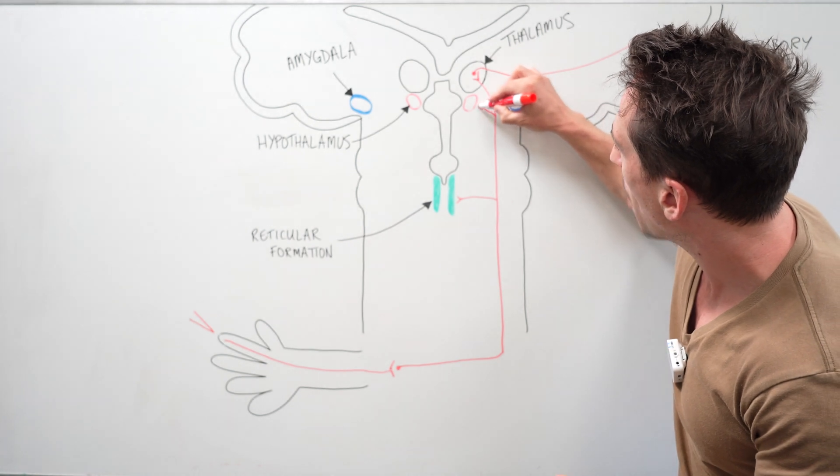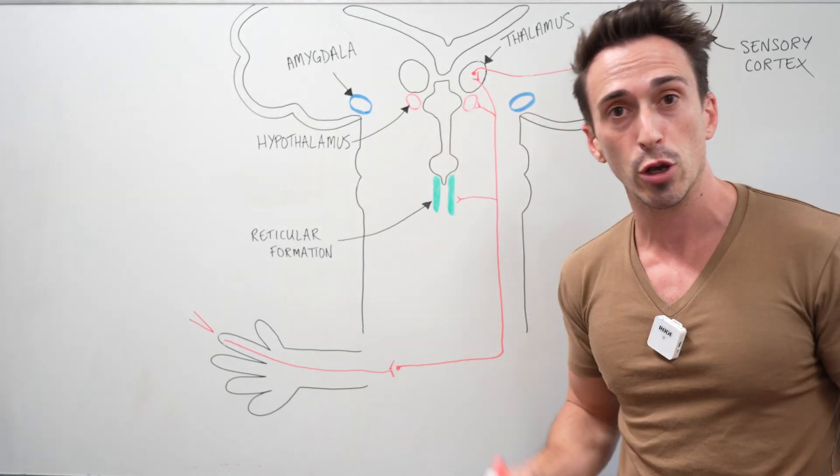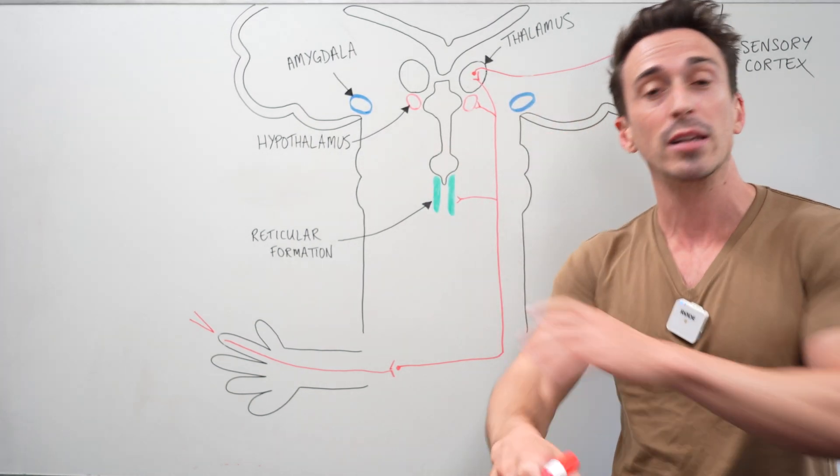It talks to the hypothalamus, which triggers the sympathetic nervous system. You can have a fight or flight response, dilated pupils, changes in breathing and heart rate, and sweating, for example.